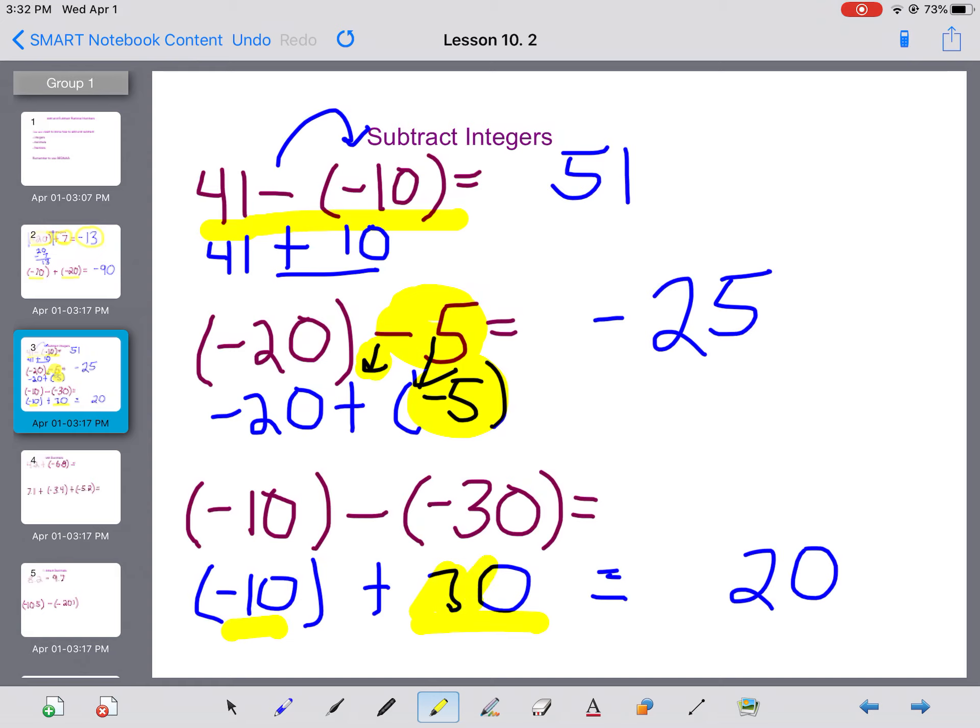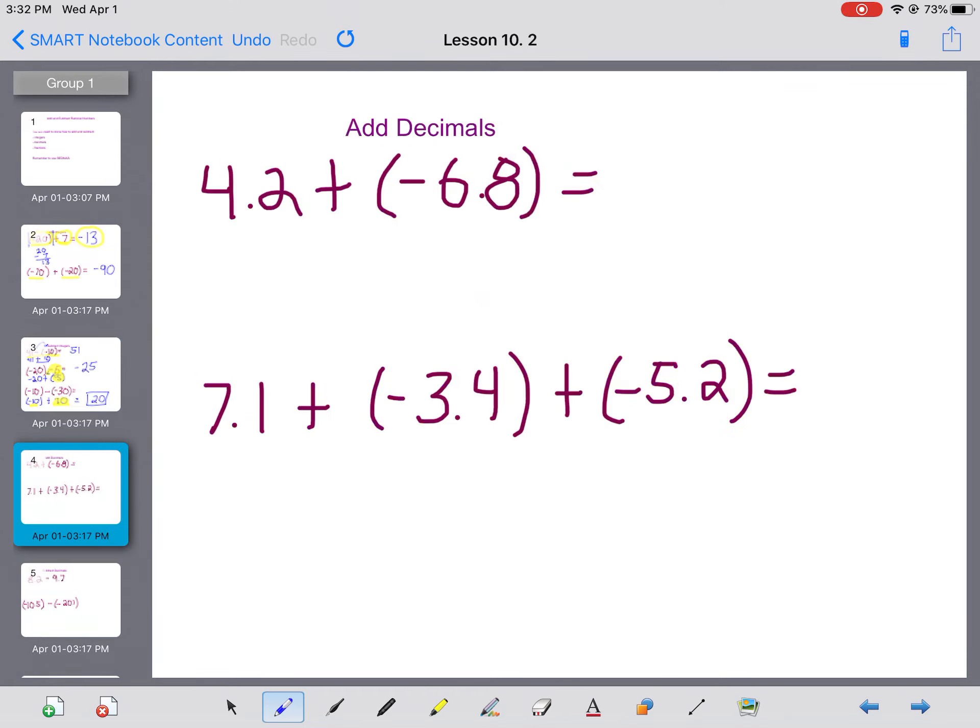Which one had the greater absolute value? It was 30. 30 was positive. So my answer is going to be a positive number. That's a quick review on integers.